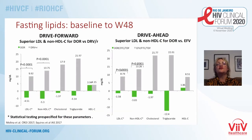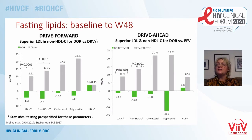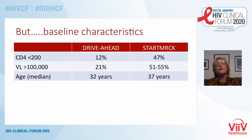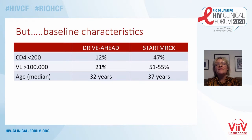Let's now look at the DRIVE studies, focusing on DRIVE AHEAD, which is a first-line comparison of doravirine and efavirenz. On efavirenz, as you'd expect, you're seeing elevations in lipids, but apparently quite uniquely for doravirine, we're seeing a reduction in some lipid parameters. So can we conclude that doravirine has a better lipid profile than raltegravir? I'd argue it's impossible to conclude that, because the baseline characteristics differ so markedly. There was a much higher proportion of people in the raltegravir study who had a low CD4 or a high viral load.